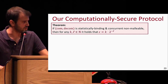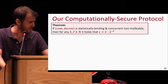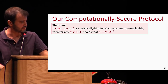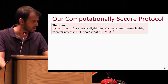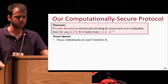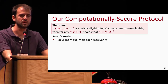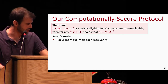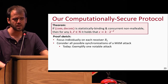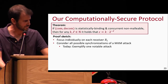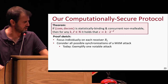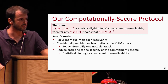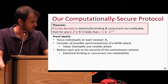Here is the theorem: if the commitment scheme is statistically binding and concurrent non-malleable, then for any k and l, the forgery probability epsilon equals k·2^{−l}. Equivalently, for any efficient adversary, the forgery probability is bounded by k·2^{−l} plus a negligible function of the security parameter. To prove this, we focus individually on each receiver and show that the probability that receiver R_i outputs a fraudulent message is bounded by 2^{−l} plus a negligible function, and the theorem follows by a union bound over all receivers. We consider all possible synchronizations the man-in-the-middle might impose on an execution of the protocol relative to R_i, and reduce a successful attack in each to a contradiction of one of the security properties of the underlying commitment scheme.